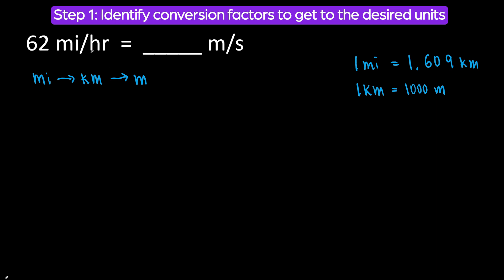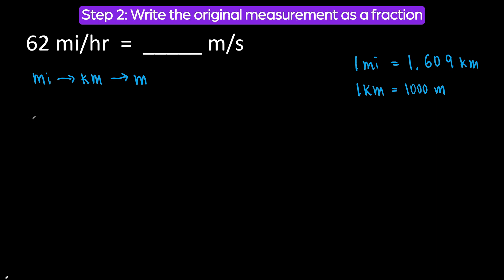Next we will change hours to seconds. Write down what you have as a fraction. What do we have? We have 62 miles per one hour. So write it as a fraction over one hour, and prepare to multiply.